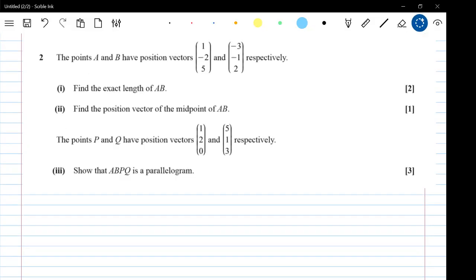Okay, so question two. The points A and B have those position vectors. Find the exact length of AB. You did this really well. So if A and B are like that, that means, let's be thorough about this, that OA is the vector (1, -2, 5), and OB is the vector (-3, -1, 2).